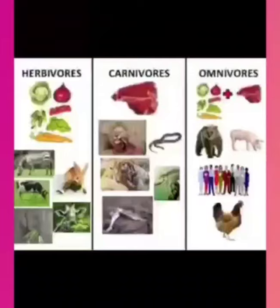Herbivorous, carnivorous, omnivorous. Herbivorous animals are those animals that eat only the plants and their products. For example, rabbit, cow, etc. Carnivorous animals are those animals that eat the flesh of other animals.